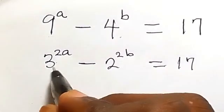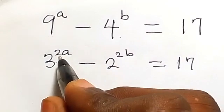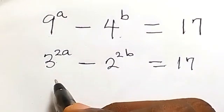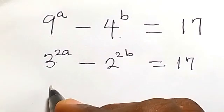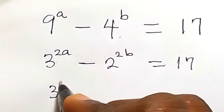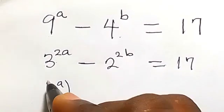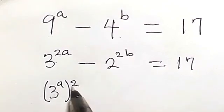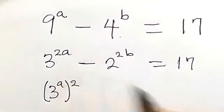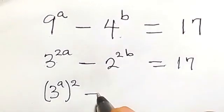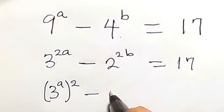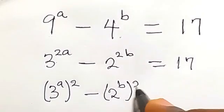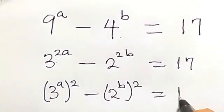From the law of indices, the 2 and a multiply together. We can write this as 3 raised to power a, then squared, minus 2 raised to power b, then squared, equals to 17.